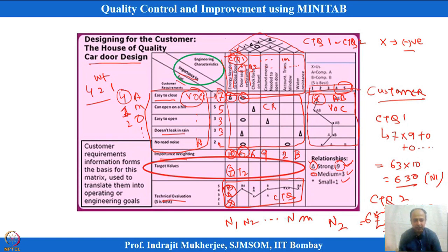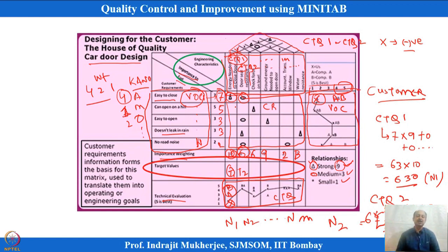The customer rating of 7 can also be multiplied by the Kano score of 4 — giving an overall importance of 7 × 4 = 28. This multiplied with the correlation score and engineer rating gives a combined overall score. Many research articles consider multiplying the Kano rating with the customer rating together.